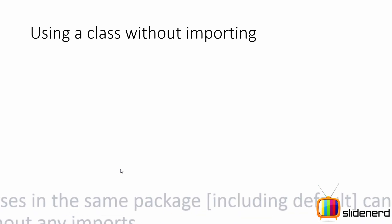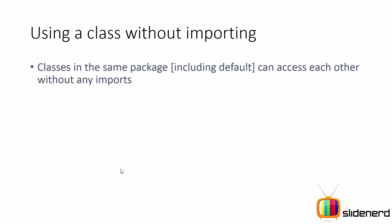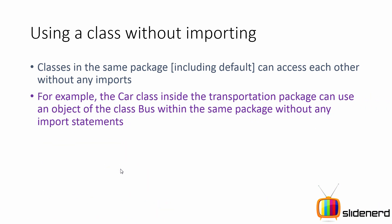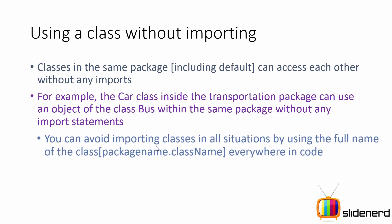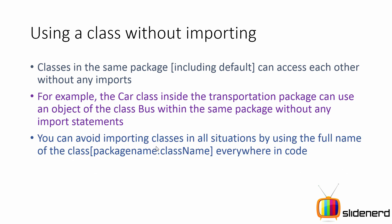Classes in the same package can access each other without using any import statements. If you have the Car class and the Bus class in the same package, you can directly call or create objects of each other across classes within that same package. You can also avoid importing classes in all situations by using the full name of the class everywhere in your code. Some of these points definitely need an example to work out, which we'll cover in the next video.